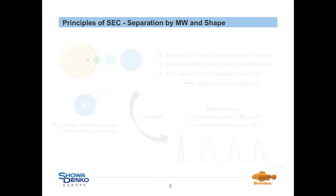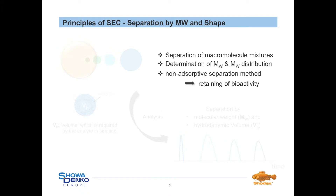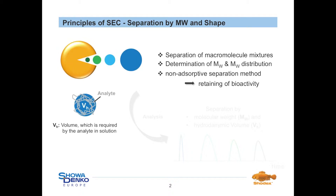Size exclusion chromatography is mainly used for the separation of macromolecule mixtures and for the determination of molecular weight as well as molecular weight distribution of the corresponding compound of interest. Moreover, this separation mode is not based on physical interactions between analytes and the surface of the packing material, but by the size of the analyte in solution. Thereby the cooperation of the pores of the stationary phase and the hydrodynamic volume or diameter of the macromolecule in the solvated state is the key factor for a successful separation.